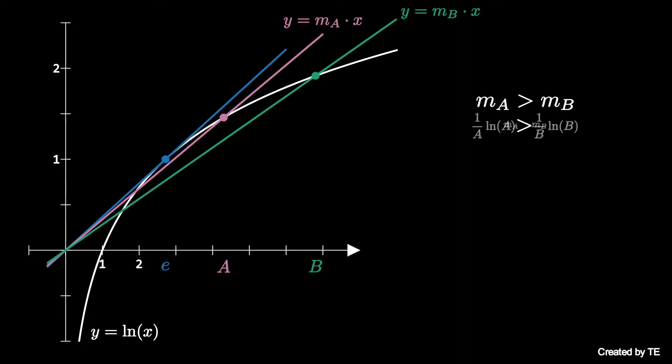These slopes are 1 over a natural log of a and 1 over b natural log of b respectively.